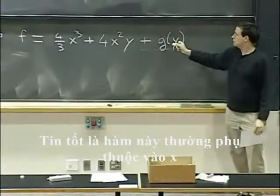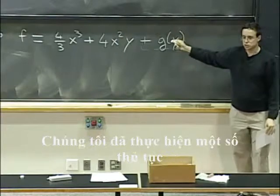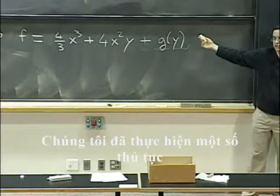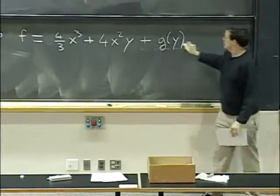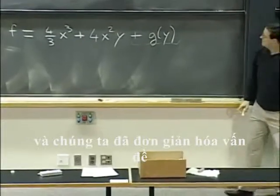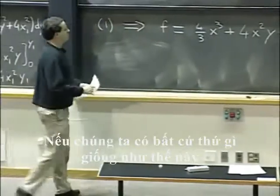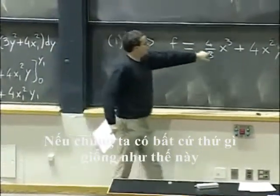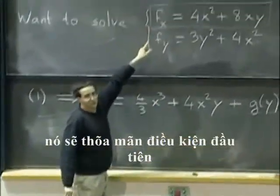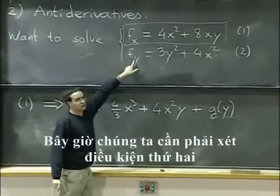OK, so the good news that we have is that this function no longer depends on x. So it should be, you know, we've made some progress. We've got part of the answer and, you know, we've simplified the problem. So if we have anything that looks like this, it will be a function of y. That will satisfy the first condition. So now we need to look at the second condition.